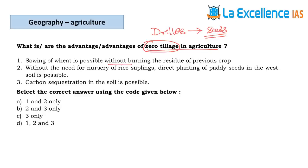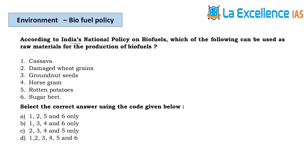Advantages of zero tillage: Statement 1 — sowing of wheat without burning the residue of previous crops is possible, relevant to Punjab and Haryana. Statement 2 — direct planting of paddy seeds in wet soil without nursery of rice saplings is possible. Statement 3 — carbon sequestration in the soil is possible because since we are not altering the soil, carbon sequestration will not get affected. Answer is D.